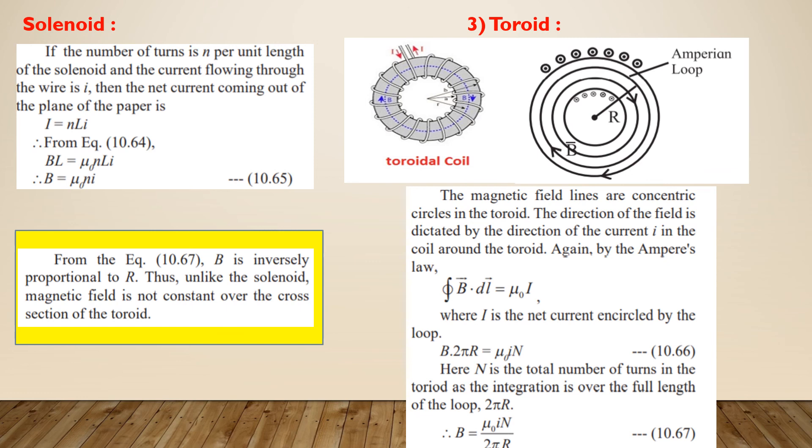This expression indicates that the magnetic field inside a toroid is inversely proportional to the distance from its center. Thus, unlike the solenoid, magnetic field inside a toroid is not constant.